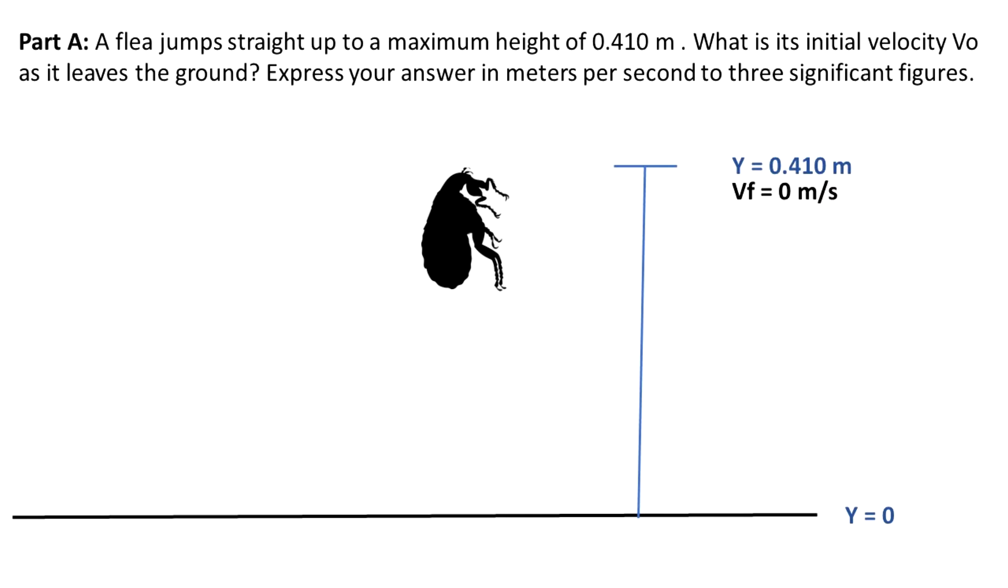When the flea is at its maximum point, the final velocity is equal to zero. Because at maximum height, the flea is stopped, so we know that at the maximum height, final velocity is equal to zero. What we want to know is what is the initial velocity that the flea had just in the moment when it jumped from the floor.